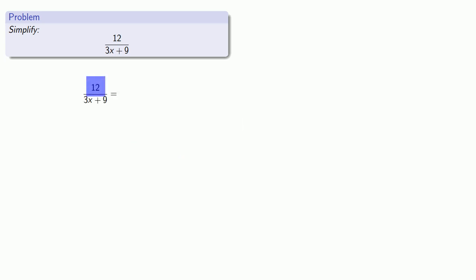In this case, our numerator doesn't look too bad. That's just a number. We're good with numbers. But our denominator is a more complicated expression. So let's see if we can factor it. 3x plus 9. We stare at this for a moment, and we realize that both terms have a factor of 3. So we can write 3x as 3 times x. Well, it's already written that way. But we can also write 9 as 3 times 3. And now, since both of our terms have a common factor of 3, we can remove it.